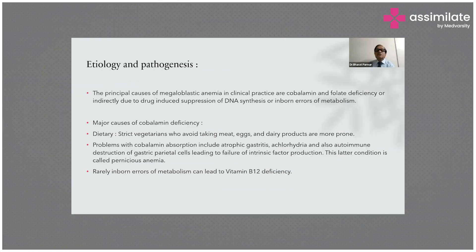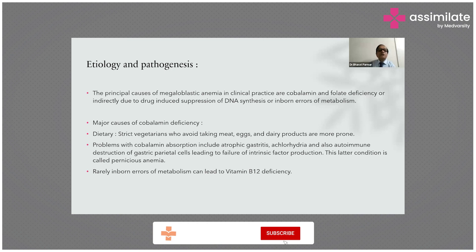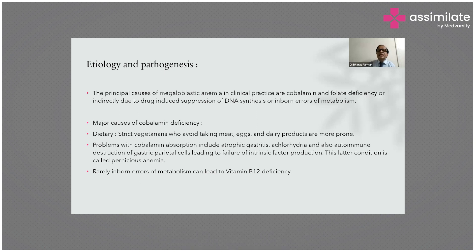The etiology and pathogenesis of megaloblastic anemia: the principal causes in clinical practice are cobalamin and folate deficiency, indirectly due to drug-induced suppression of DNA synthesis, and inborn errors of metabolism such as orotic aciduria.